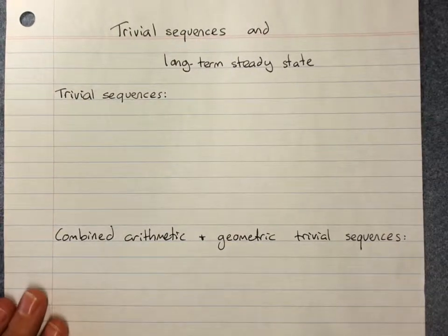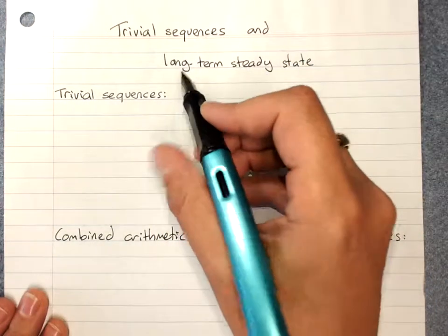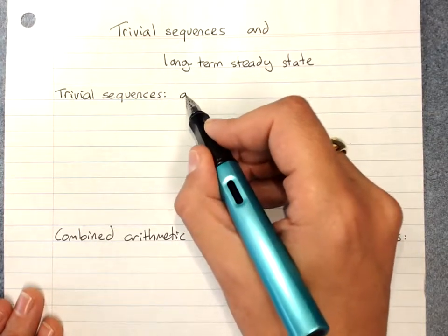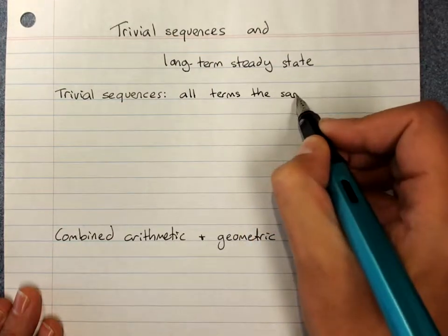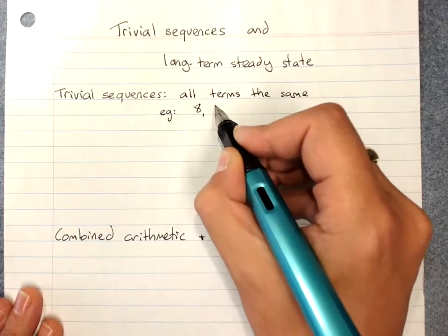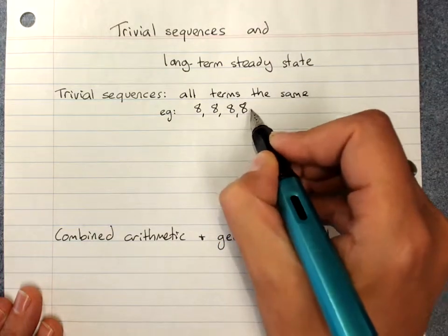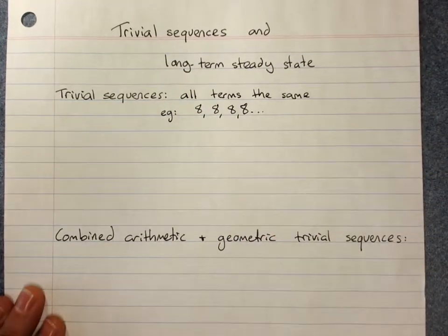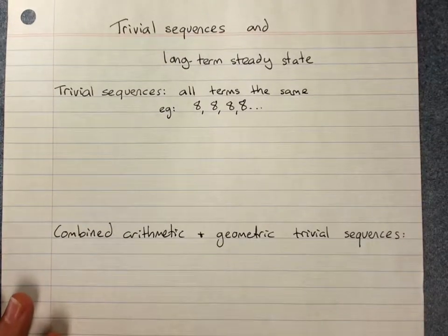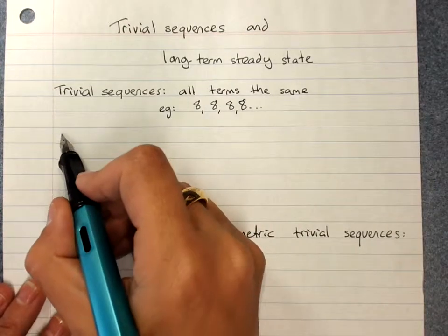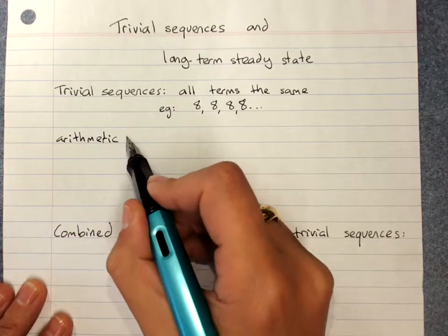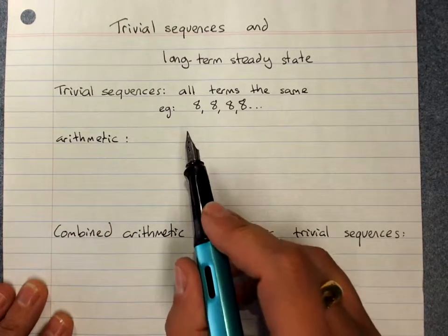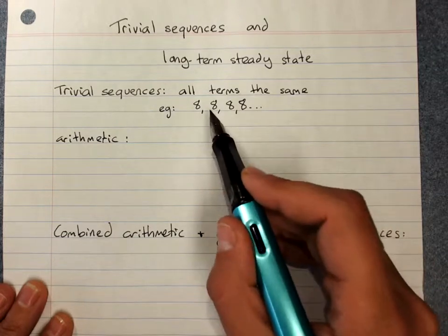Trivial sequences and long-term steady state. Trivial sequences have all terms the same. For example, 8, 8, 8 is a trivial sequence. It actually is not useless. An arithmetic sequence will be trivial if the common difference is 0. So 8 plus 0 is 8, 8 plus 0 is 8.